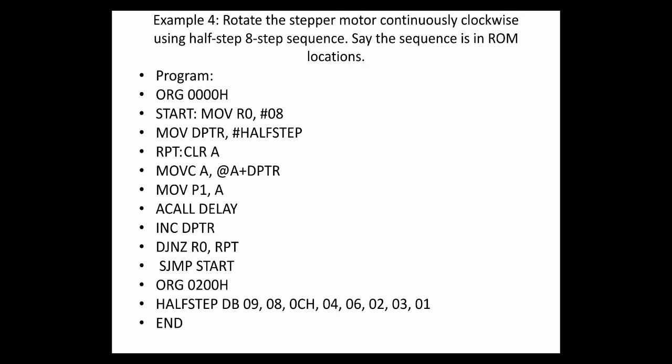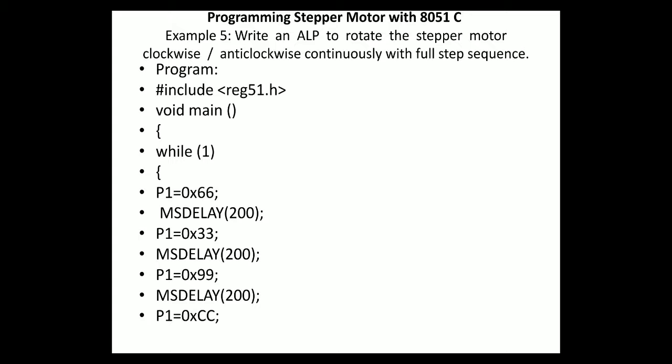Now we will go to the next line of our programs. We are only getting used to assembly programs, but we should also be good in C language. So next programs will focus on C language programs — programming stepper motor with 8051 C programs. The program requirement: write a program to rotate the stepper motor clockwise and anticlockwise continuously with full step sequence. This is the same program I have done already using assembly, but now done using C.